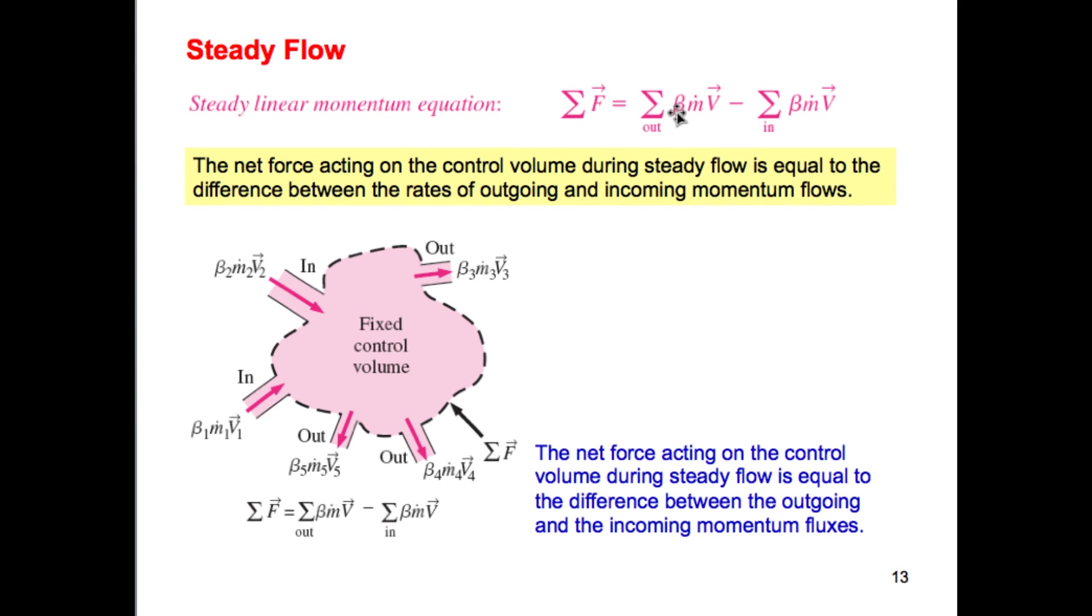So if it's steady, so you guys will see a beta term here, that's just a correction factor that's used. We'll try not to use those to confuse you guys. Just know that momentum is the mass times velocity, or here it's the mass flow rate times the velocity.